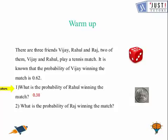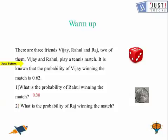The probability of Rahul winning the match is 0.38. Now, what is the probability of Raj winning the match? Since Raj is not playing the match, the probability for him will be 0. If you got these two as the answer, that's really wonderful — that's the correct answer.